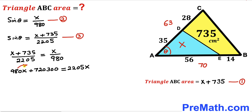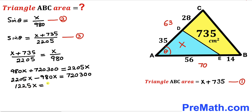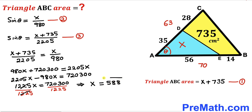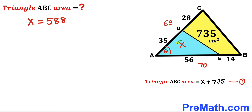Moving 980x to the other side: 2205x − 980x = 72300, which gives 1225x = 72300. Dividing both sides by 1225 to isolate x, we get x = 588 centimeter square.